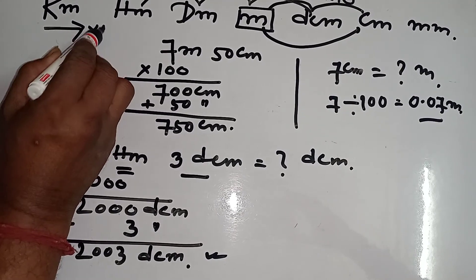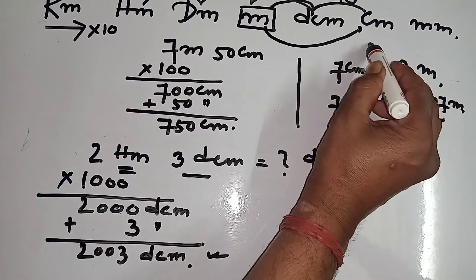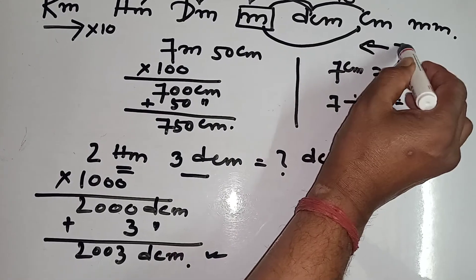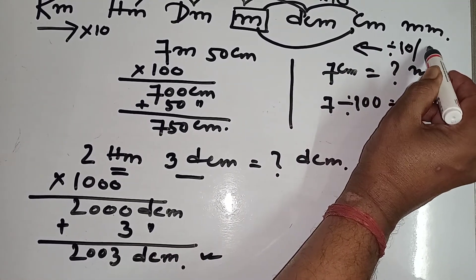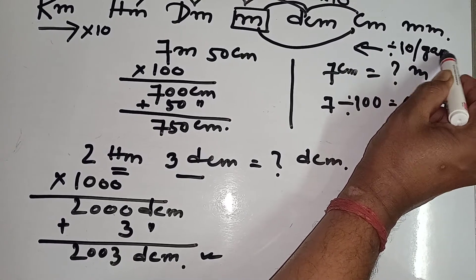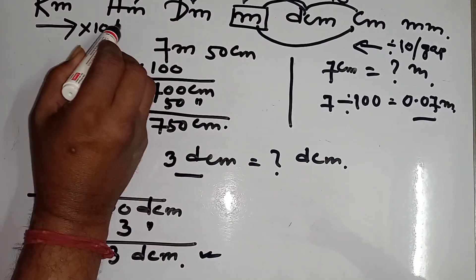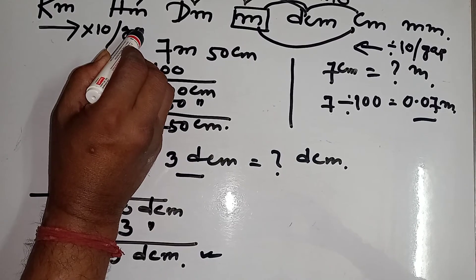When you will go from left to right then multiply by 10, and you go here, divided by 10 per gap. Here also per gap.